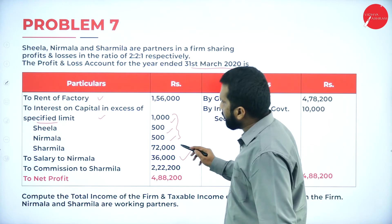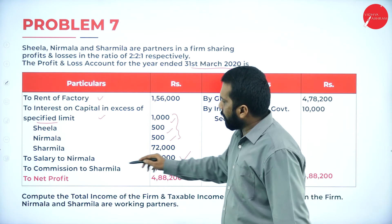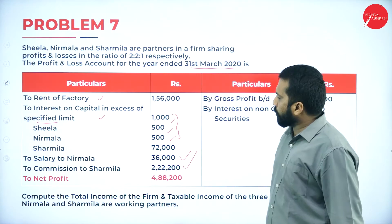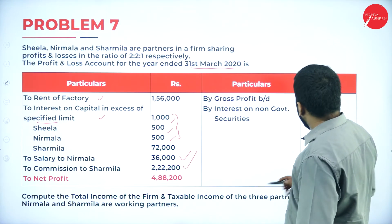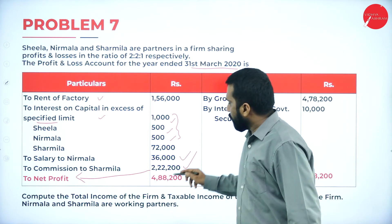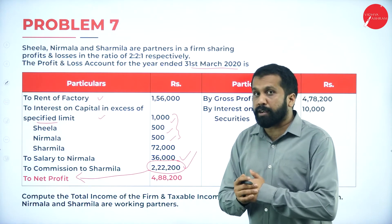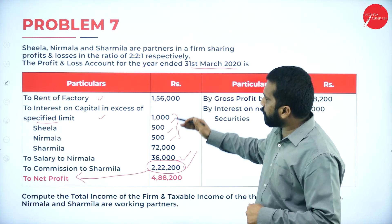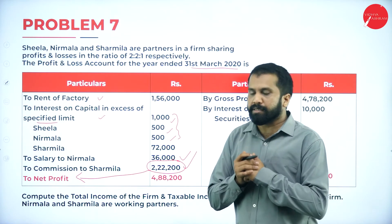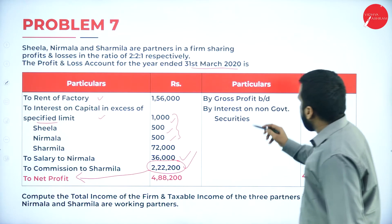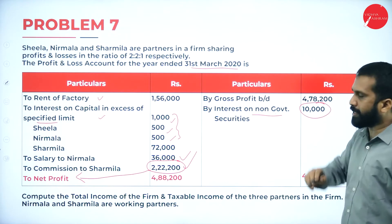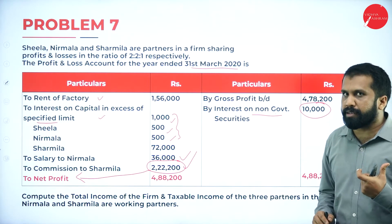Salary to Nirmala - yes, we are supposed to take. Commission to Sharmila - yes, we are supposed to take. Your total is 4,88,200 and the net profit is 2,20,200. For 2,20,200 you are supposed to add all the benefits given to partners, then minus interest on non-government security because it is an income, not related to your business.